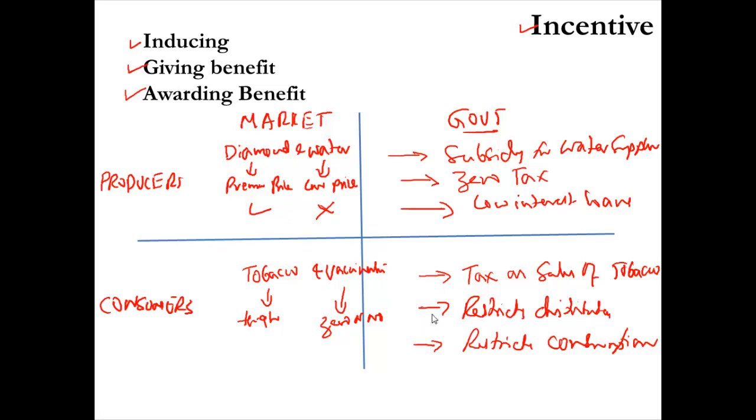Most of the times, market incentive structures are fair and they do a better job than the government. But in some cases, market incentive structure fails to encourage something good for the society. Therefore, in such cases, government interferes and then offers its own incentive structure to modify the market incentive structure.